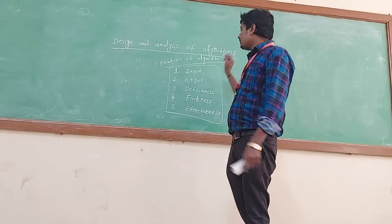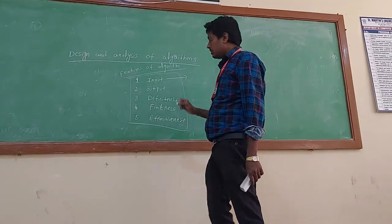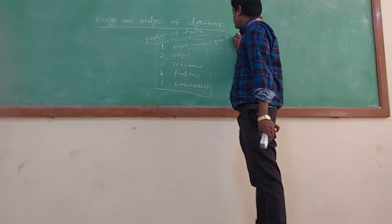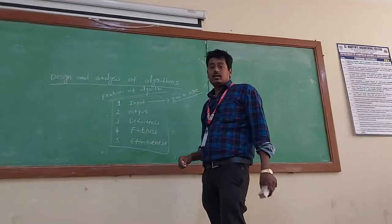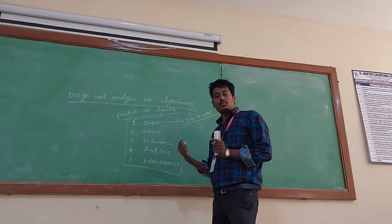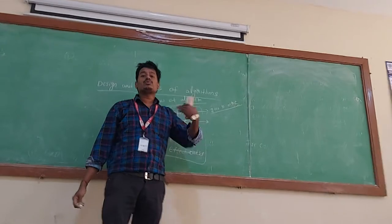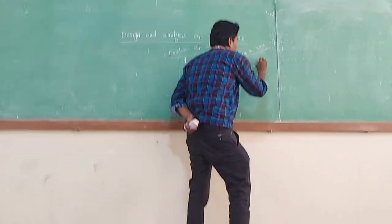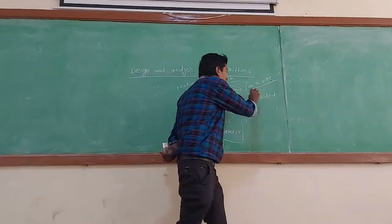For every algorithm or every program, the input values may be zero or more. When writing an algorithm or a program, the user must supply either zero input values or more than zero — that means one, two, three, or anything. Coming to output, only a single output is generated for any algorithm.